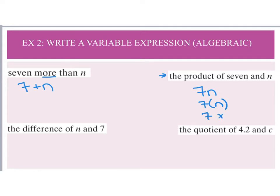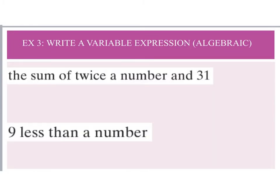Next, 'the difference of n and seven' becomes n minus seven. The last one says 'the quotient of 4.2 and c' — quotient means we are dividing, so this is 4.2 divided by c.